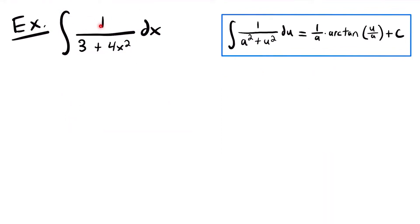Next up, we have the integral of 1 divided by 3 plus 4x squared dx. For this example, we're going to use a different integration rule — the one for arctangent, or the inverse of the tangent function. The structure of this rational function is similar to the arctangent rule: 1 divided by a constant plus some function of x squared. So a squared equals 3 and u squared equals 4x squared.